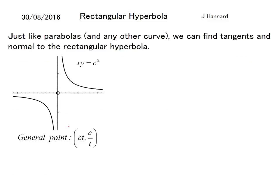So just like parabolas and any other curve we can find tangents and normals to the rectangular hyperbola. So xy equals c squared. Remember if we're finding a tangent we need to get y on its own so we write it like that. Then if you remember we need to differentiate so we're going to need that x in power form so we write it like that.